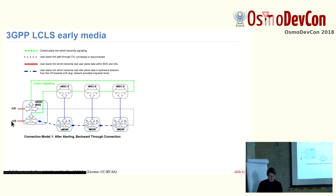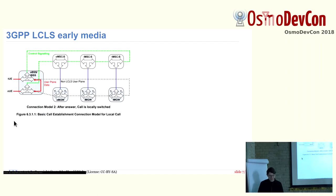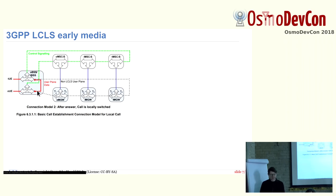The early media comes from the core network and gets injected to the originating user equipment, and it's not connected anywhere else. So originally, when you start the call, you still get the media from the core network, and then later on you introduce this short circuit, with some signaling involved. So basically you start in the classic way with all voice going to and coming from the core network, but then there can be signaling from the MSC which closes the loop — the short circuit in the BSS — and enables the Local Call Local Switch feature.